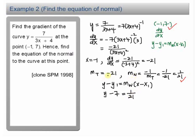This is gradient for normal. The gradient for tangent is negative 21. We are finding gradient for normal, equation for normal. So we have x minus x1, which is minus negative 1. We have x plus 1.